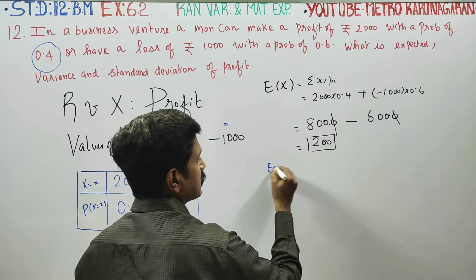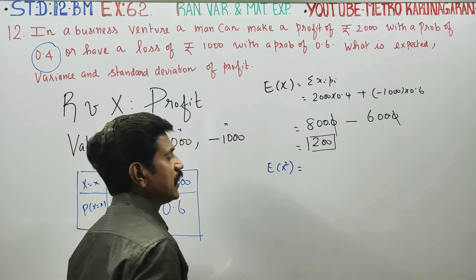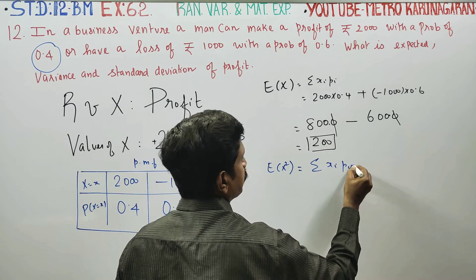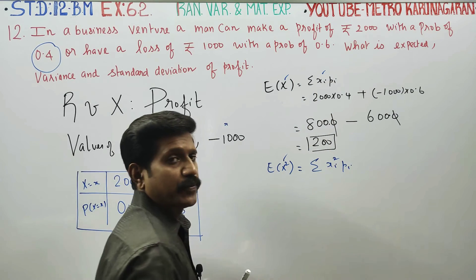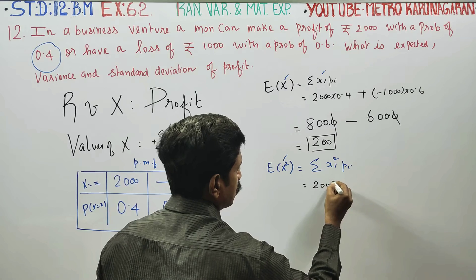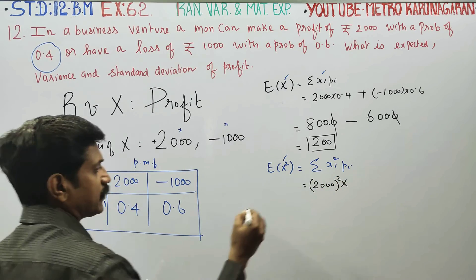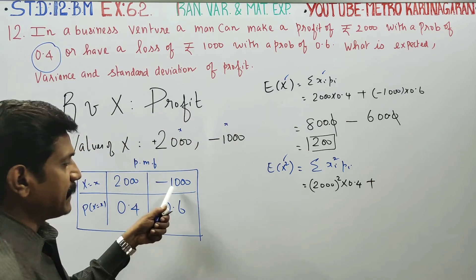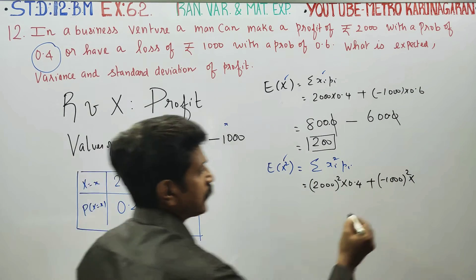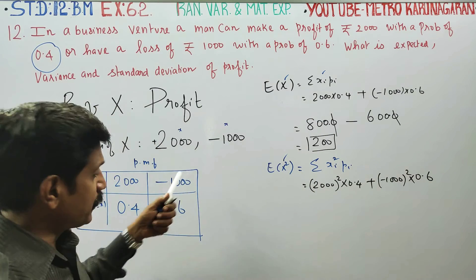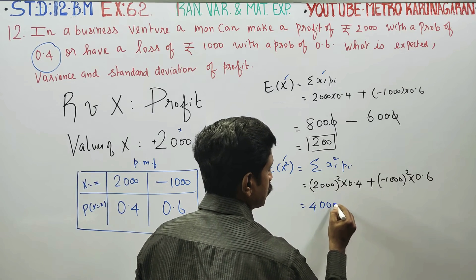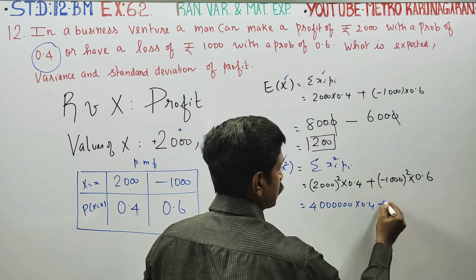Next, we compute E(X²). The formula for E(X²) is the sum of x² times P(X = x). So E(X²) = (2000)² × 0.4 + (-1000)² × 0.6. Now, 2000 squared is 40,00,000 (40 lakhs), multiplied by 0.4, plus 1000 squared is 10,00,000 (10 lakhs), multiplied by 0.6.